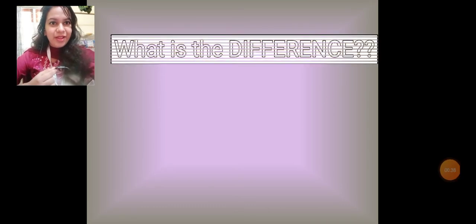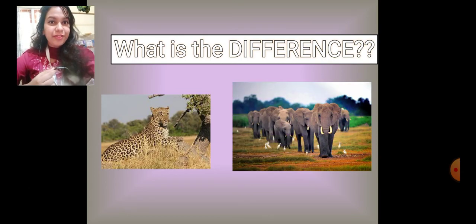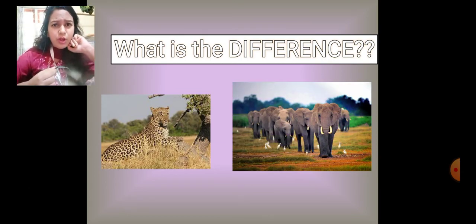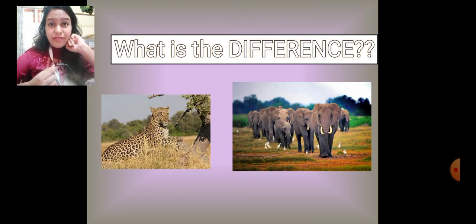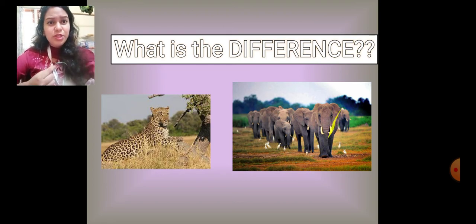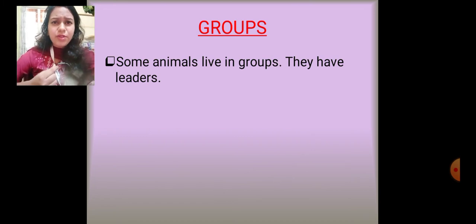What do we have in these two pictures? In the first picture we have a lone leopard sitting all alone, and in the second picture we have a herd of elephants — a family of elephants. Do humans like living alone? We all live with our family. The leopard is sitting all alone, but the elephants are with their whole family. So some animals like living in groups.